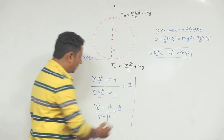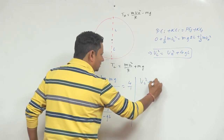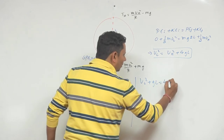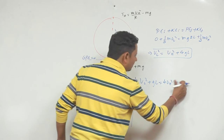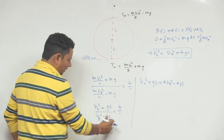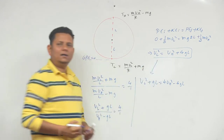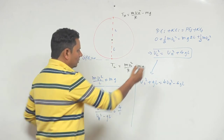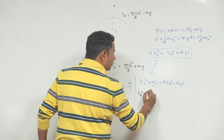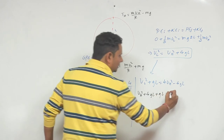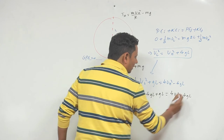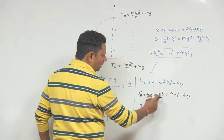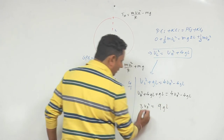Cross multiply करने पर: V²_L + gL = 4V²_H − 4gL। अब V²_L की value ऊपर से substitute करते हैं: V²_L = V²_H + 4gL। इसे insert करने पर: V²_H + 4gL + gL = 4V²_H − 4gL। Simplify करके: 3V²_H = 9gL।